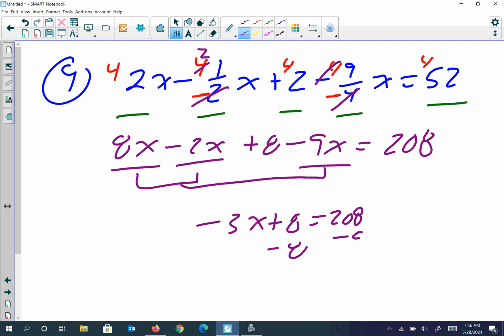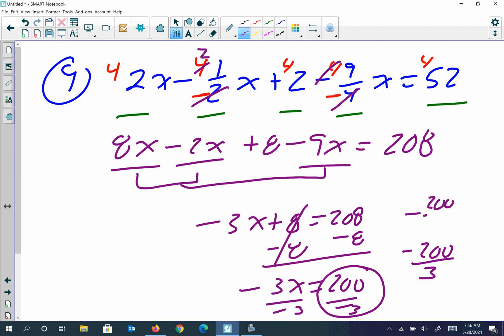Subtract 8 from each side. Those cancel, so I get negative 3x is equal to 200. Divide each side by negative 3, and so this is your answer: 200 over negative 3, or you could have negative 200 over 3, or you could actually have it as negative out the front. So any of these representations of that answer would be correct.